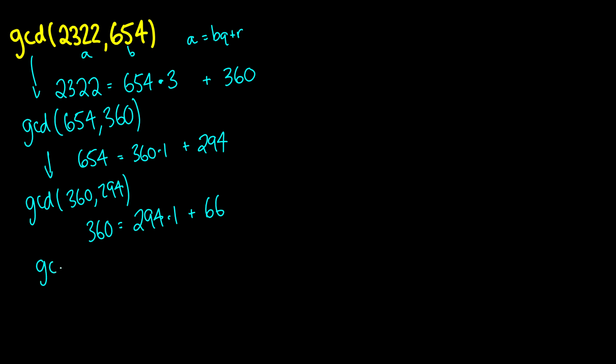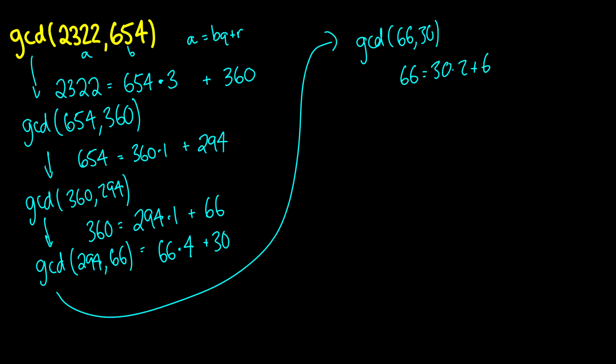So this is going to be the same thing as the GCD of 294 and 66, which is a little bit harder to calculate, but it's finally nice that we're going down by numbers that aren't just multiples of 1. So this will be 66 times 4, and the remainder will be 30. So when we keep going, this is now going to be the GCD of 66 and 30.